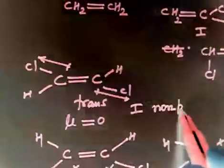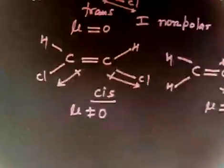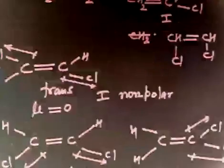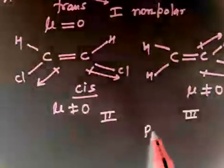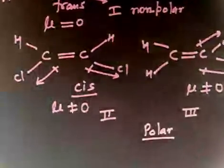So let's say this is one. So trans will be nonpolar because it has zero dipole moment. And compound two and three are getting or not. So one will be nonpolar. And two and three, so this two and this three will be polar because they have some dipole moment.